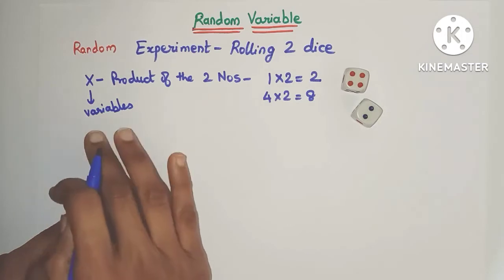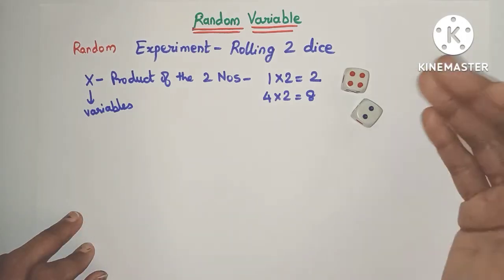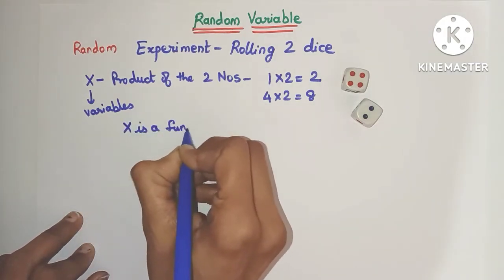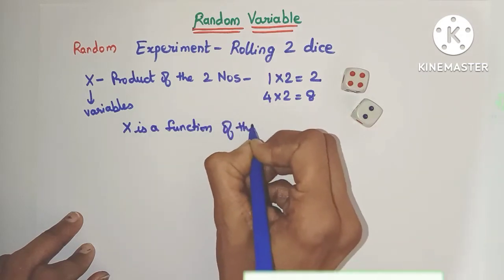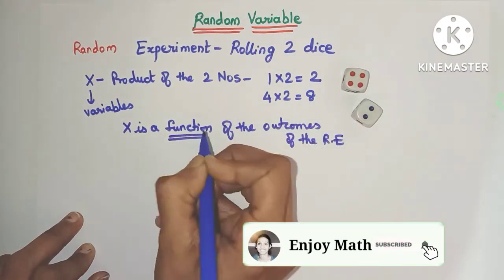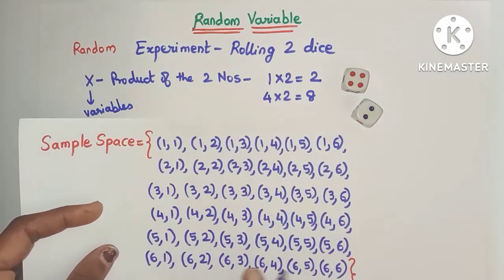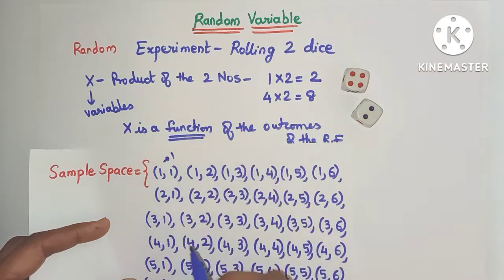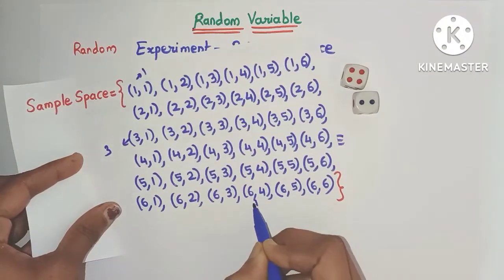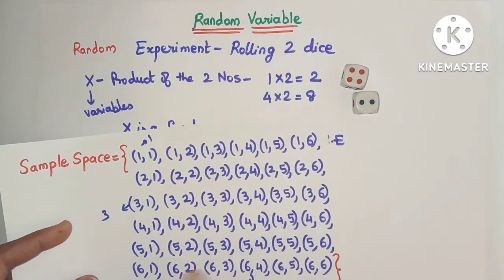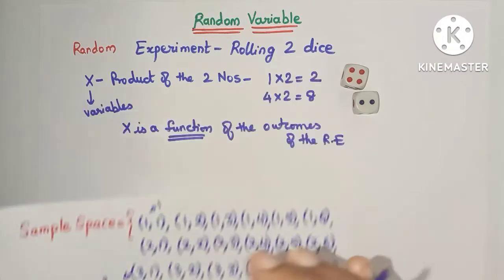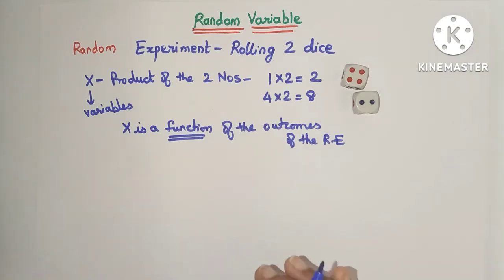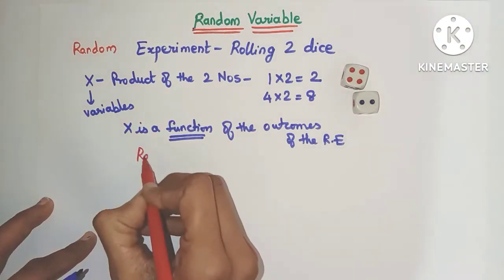This variable x is dependent on the outcome of the experiment, so x is a function of the outcomes of the random experiment. Each of the 36 outcomes will be associated with a single product — for example 1 into 1 is 1, 3 into 1 is 3, 6 into 4 is 24. Each outcome has a unique product, so x is a function and also a variable. This variable is given the special name: a random variable.